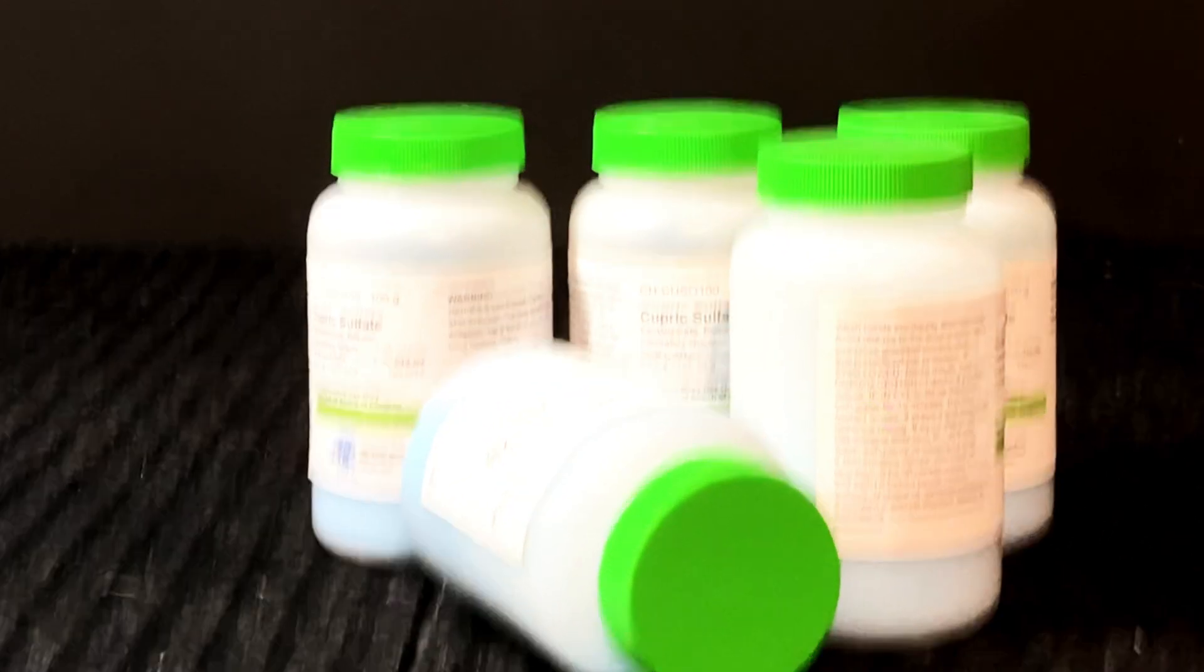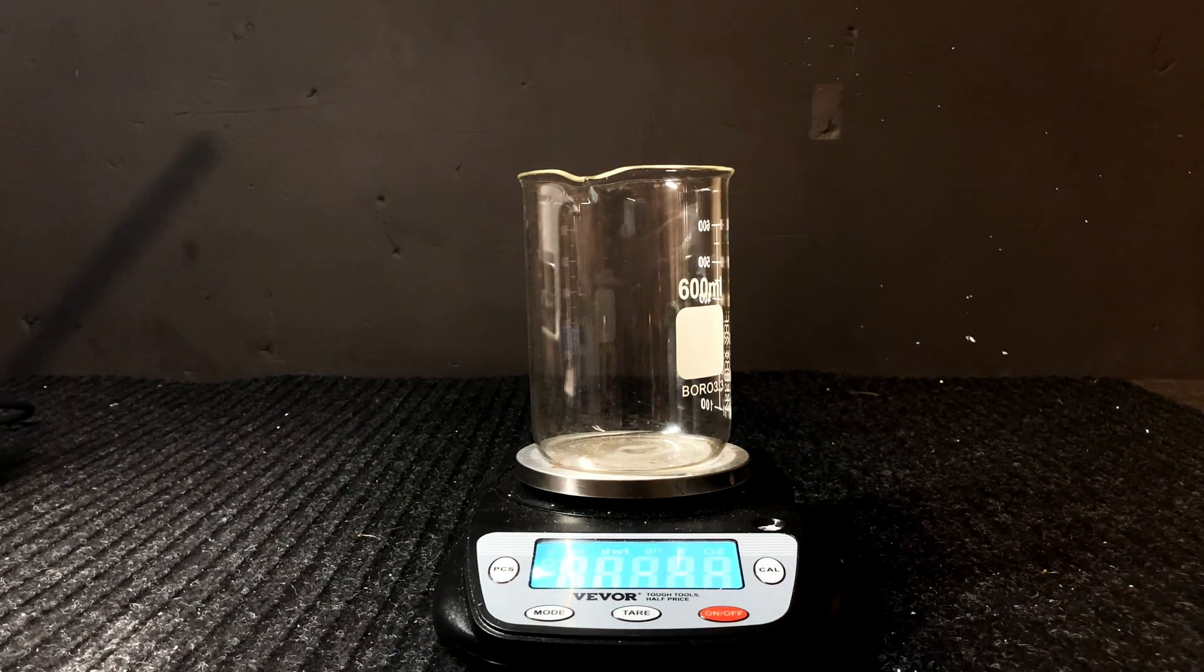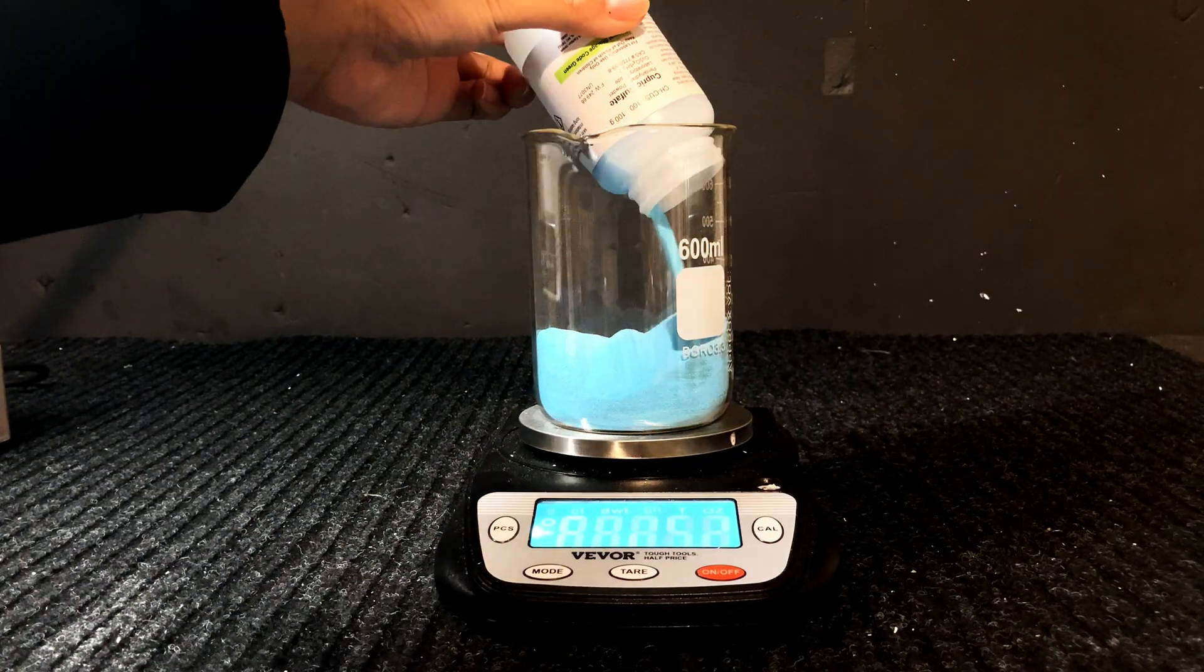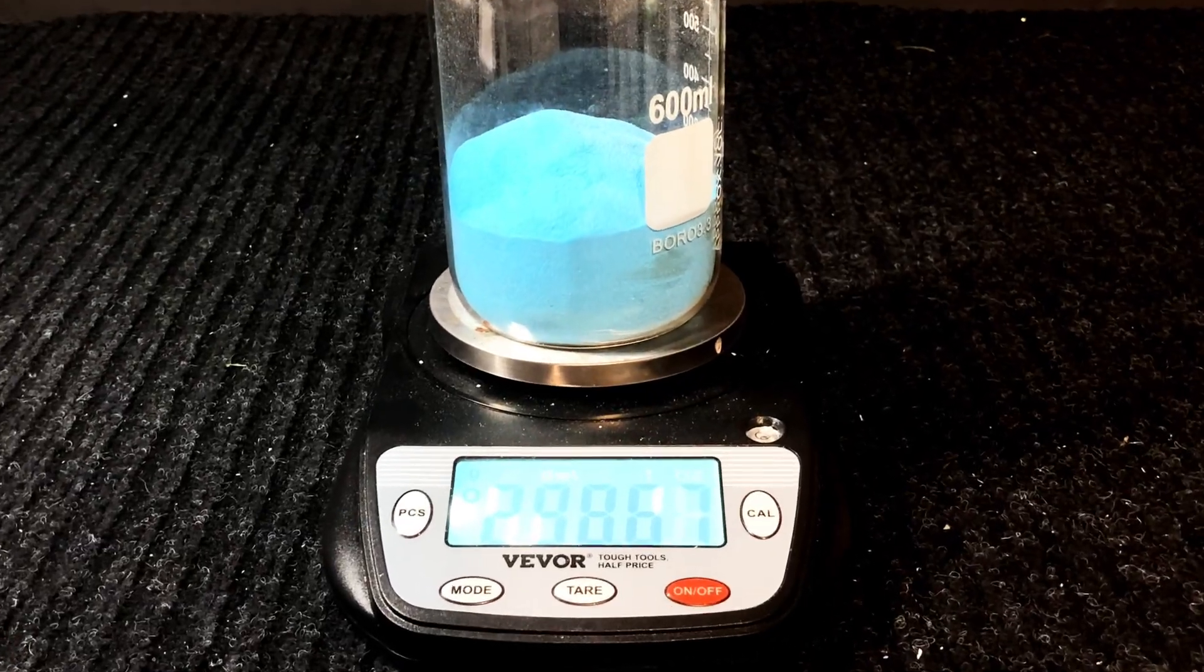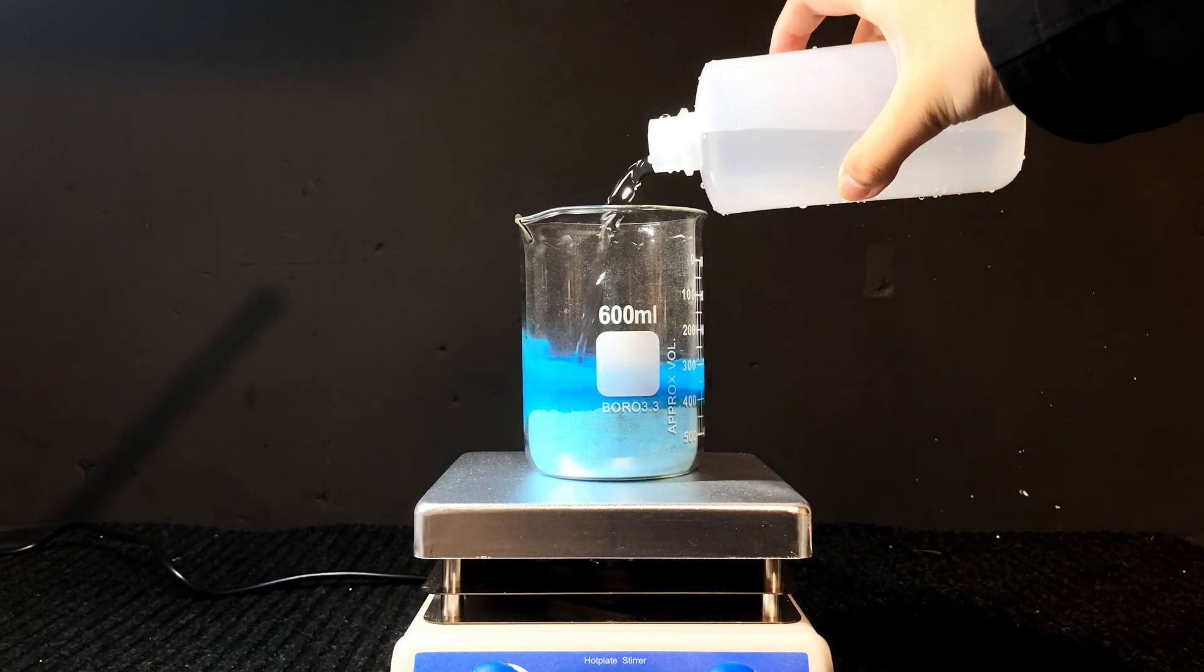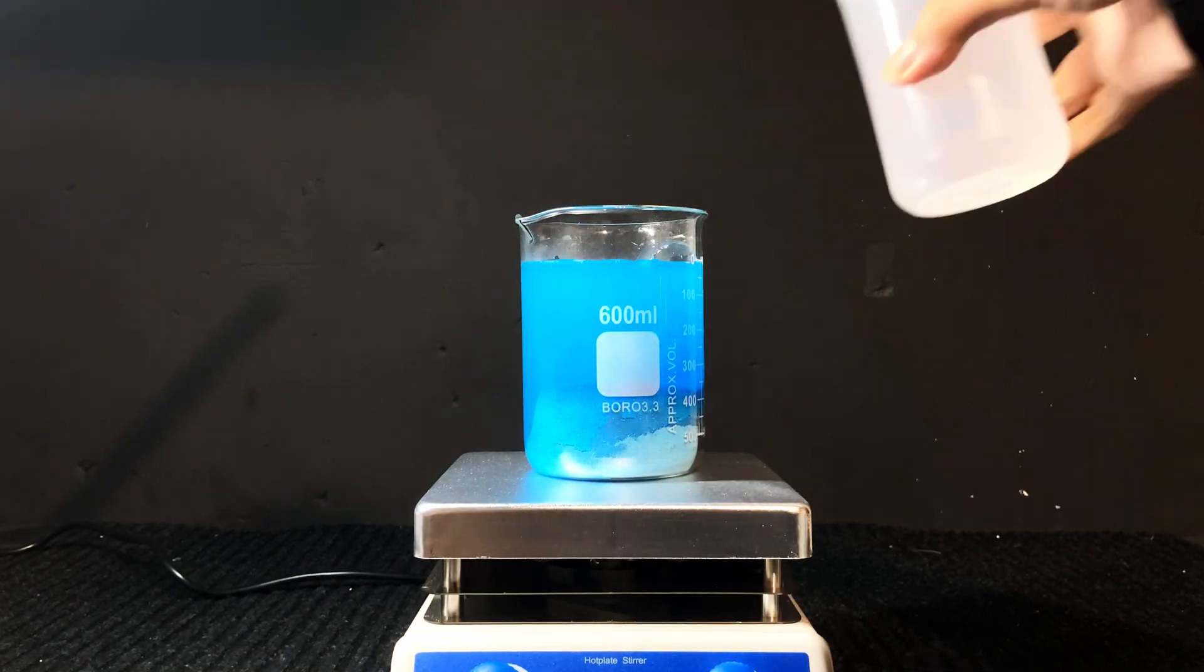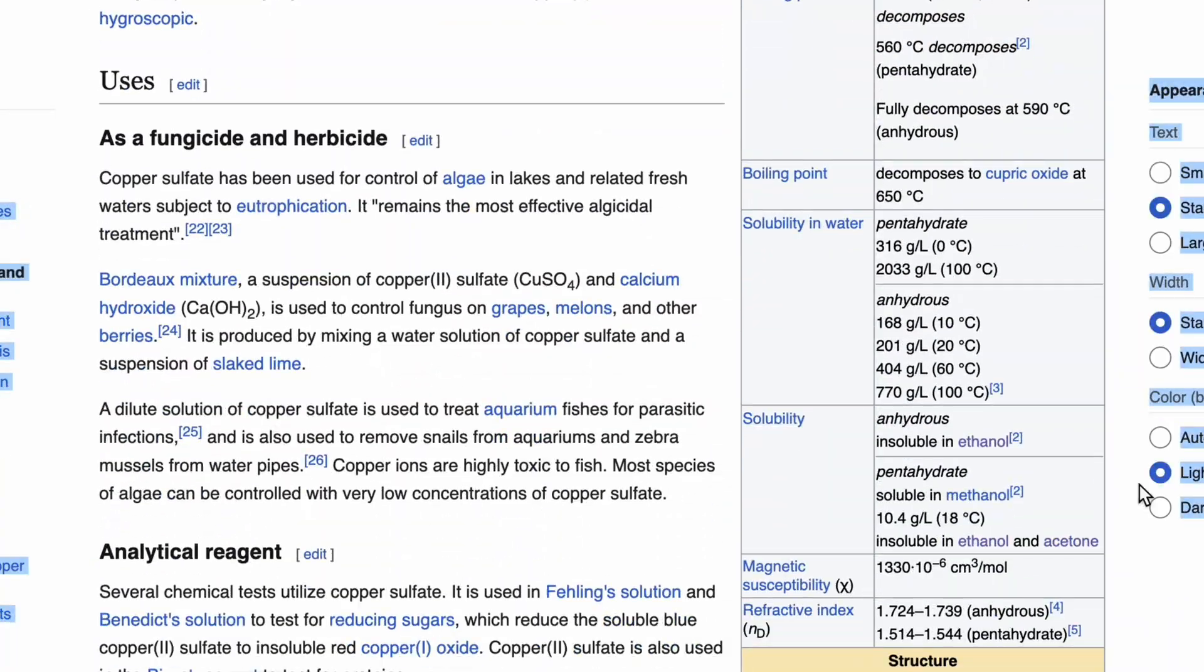This is half a kilo of cupric sulfate, aka copper-2-sulfate, or 500 grams of it, and our first step was to dissolve it in a ton of water in order to make a saturated solution. This is only about 300 grams in a beaker that I measured out. I then started pouring a lot of water into this 600ml beaker, and according to the research I did, 2 kilos of copper sulfate pentahydrate should be soluble in just 1 liter of water at 100°C, so this much water should be enough.